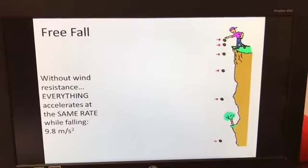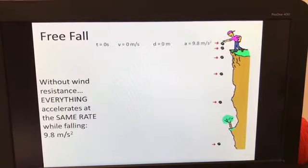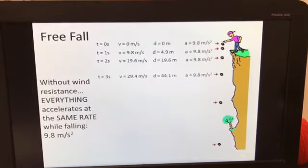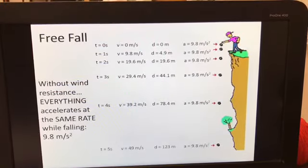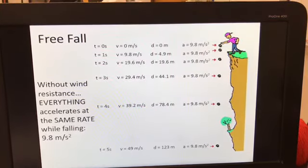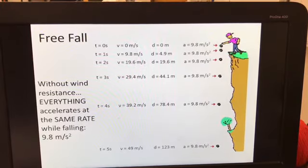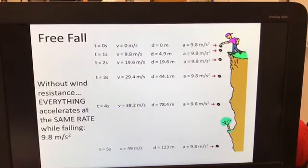All right, free fall without wind resistance. Everything accelerates at the same rate while falling at 9.8 meters per second squared. So there you go at each time interval. Notice how the velocities are increasing by 9.8 every second, but the acceleration remains the same of 9.8. The formula for the distance is rather specific.